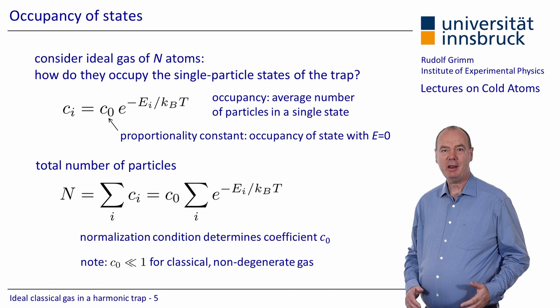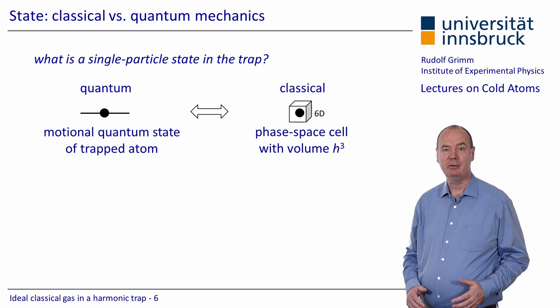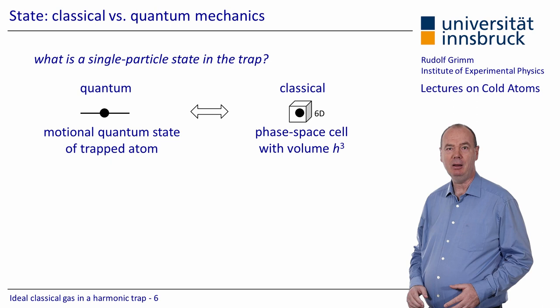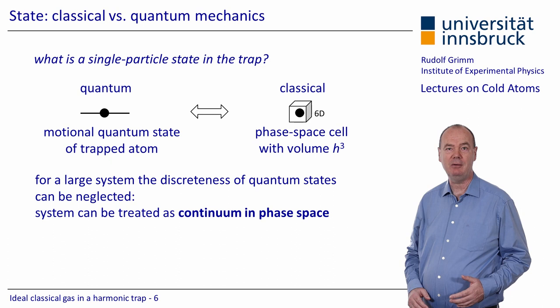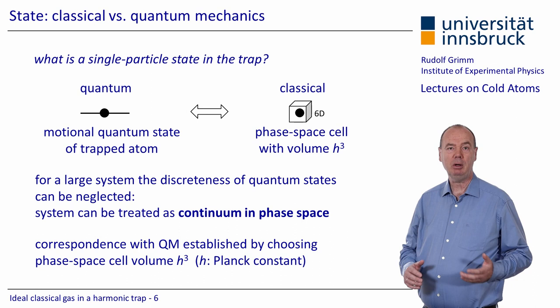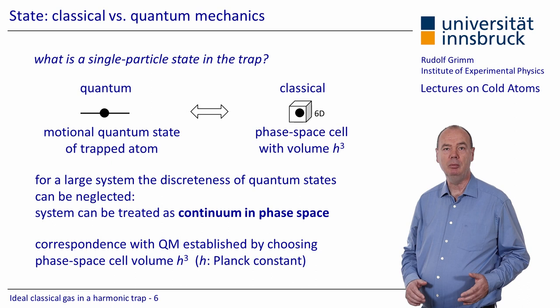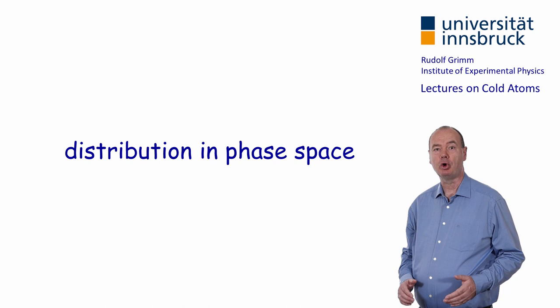What is a single particle state in the trap? In quantum mechanics the answer is rather straightforward: it is the motional quantum state of a trapped particle. In classical mechanics this corresponds to a six-dimensional phase space cell with volume given by the Planck constant h to the third power. For a large system supporting many states, the discreteness of quantum states can be neglected and the system can be described as a continuum in phase space. The correspondence between classical and quantum mechanics is established by our choice of h cubed as the volume of a phase space cell.